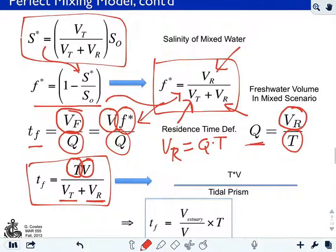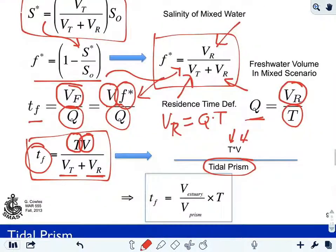So now we have an estimate of the flushing time given to us by simply the ratio of the timescale of the tide, 12 hours roughly, times the volume of the estuary divided by the tidal prism. We can write it here.